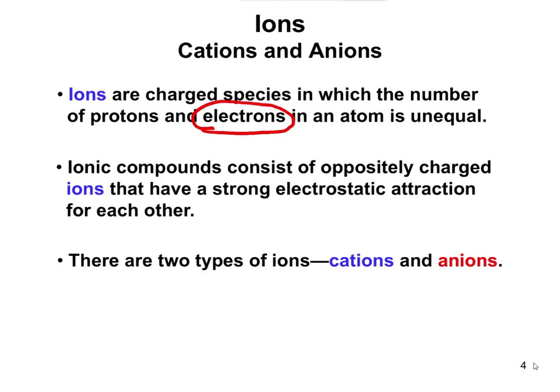A positively charged ion reacts with a negatively charged ion, and those come together by what's called an electrostatic interaction — opposites attract. We refer to these two types of ions as cations, which are the positively charged ones, and anions, which are the negatively charged ones. Whenever you have an ionic compound, you're always going to have a cation attracted to an anion.